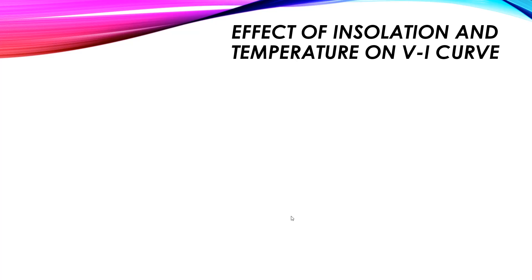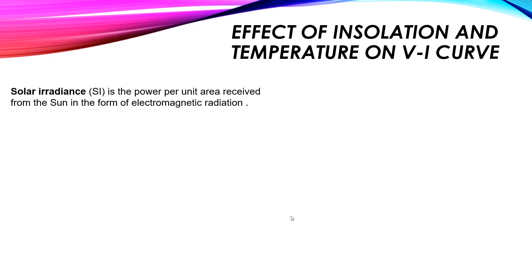We would like to discuss the effect of insolation and temperature on the IV curve and the power curve. First we need to define insolation, or solar irradiance. Solar irradiance means the power per unit area received from the sun in the form of electromagnetic radiation, expressed in kilowatts per meter squared.